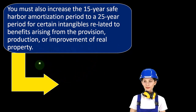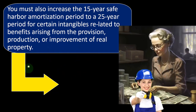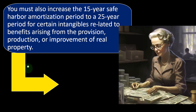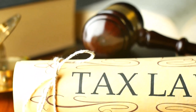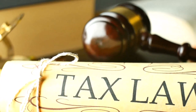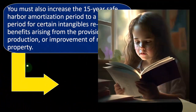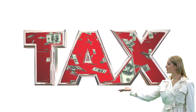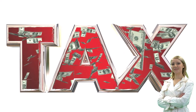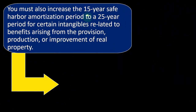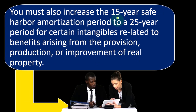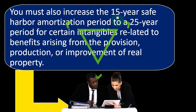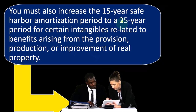You must also increase the 15-year safe harbor amortization period to a 25-year period for certain intangibles related to benefits arising from the provision, production, or improvement of real property. As a general rule, the tax code tells us how many years we have to depreciate something over and often what method we have to use. Under GAAP on the financial side, we might have more leeway to choose how long to depreciate something, because our incentive is to report accurately for decision-making purposes rather than to reduce taxes. For tax purposes, the shorter the depreciation duration the better, because that means we get to depreciate more earlier.